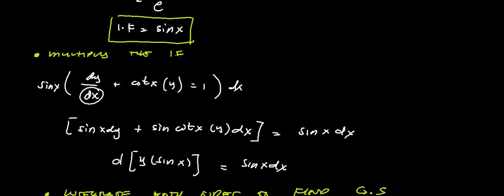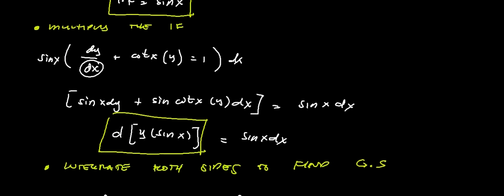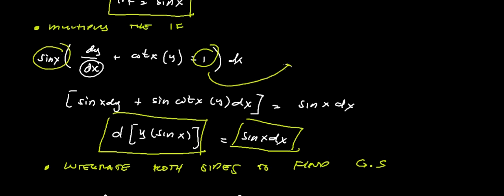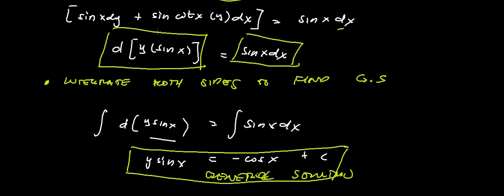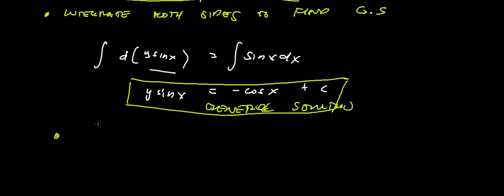If we multiply this integrating factor to our ordinary linear differential equation, we get these exact derivatives. The right-hand side is Q(x) multiplied by the integrating factor, times dx. Both sides are integrable, so we integrate both sides to find the general solution: y·sin(x) equals negative cosine x plus C. If there's any given initial condition, you can further find the particular solution.